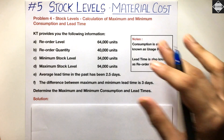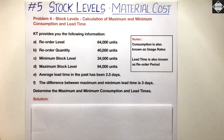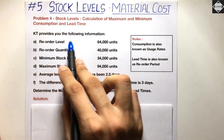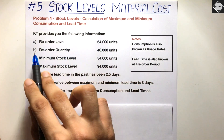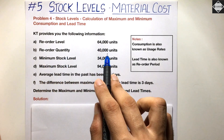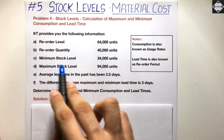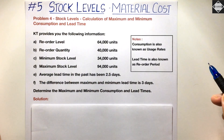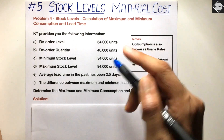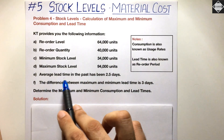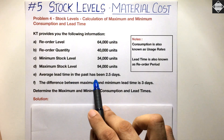Now let's read the question. KT provides the following information: reorder level 64,000 units, reorder quantity 40,000 units, minimum stock level 34,000 units, maximum stock level 94,000 units. So these four different values have been given — three stock levels and one reorder quantity.